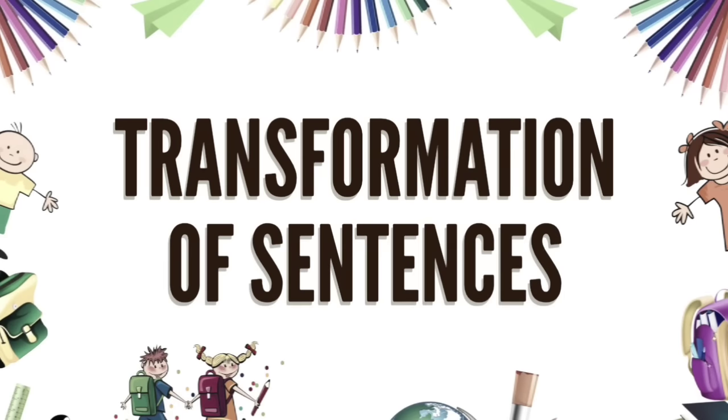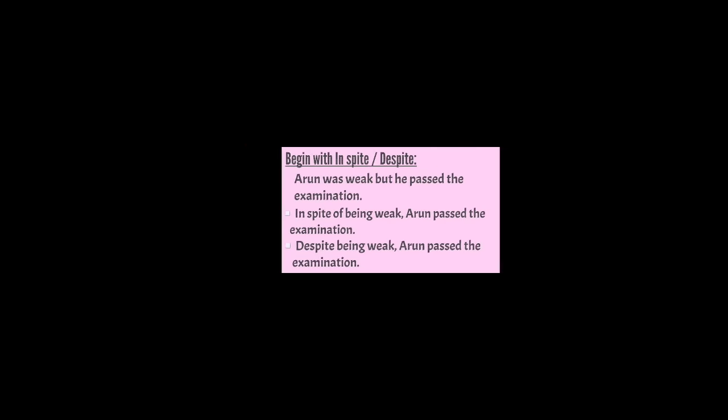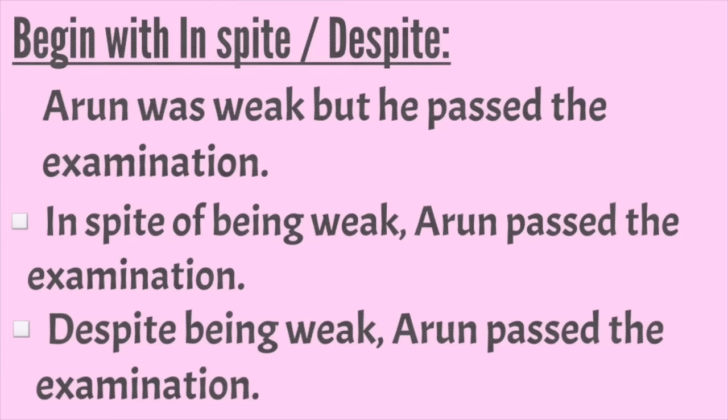Let's quickly revise a few transformations of sentences. Begin with 'in spite of' and 'despite': 'Arun was weak but he passed the examination' becomes 'In spite of being weak, Arun passed the examination' or 'Despite being weak, Arun passed the examination.' Note: with 'in spite' we use 'of', but 'despite' comes alone, and in both cases placing a comma is compulsory.